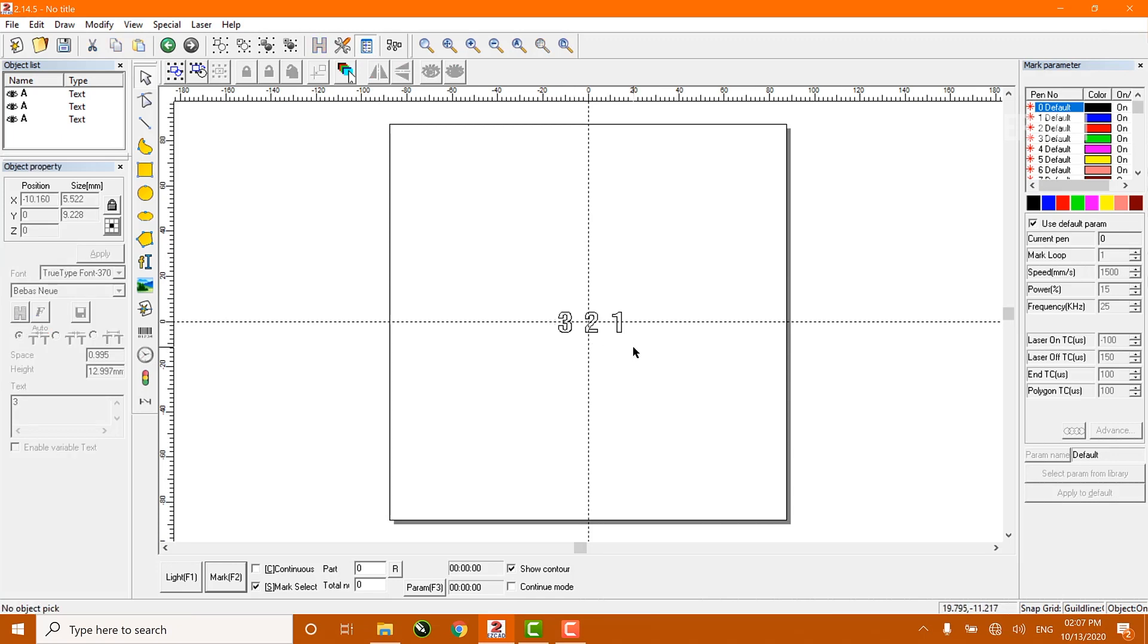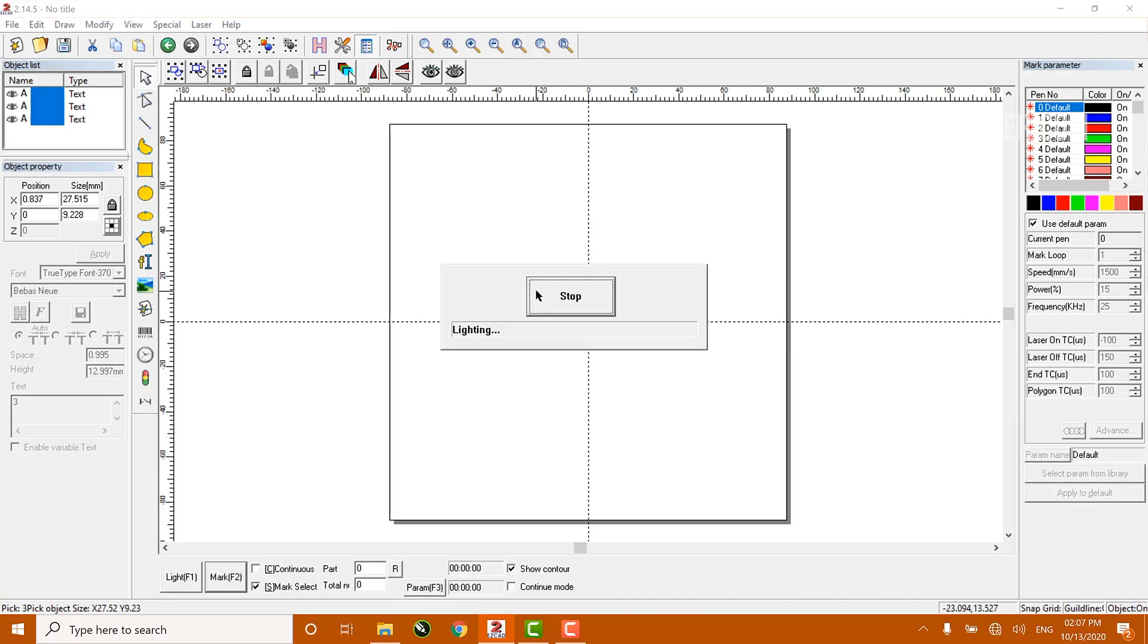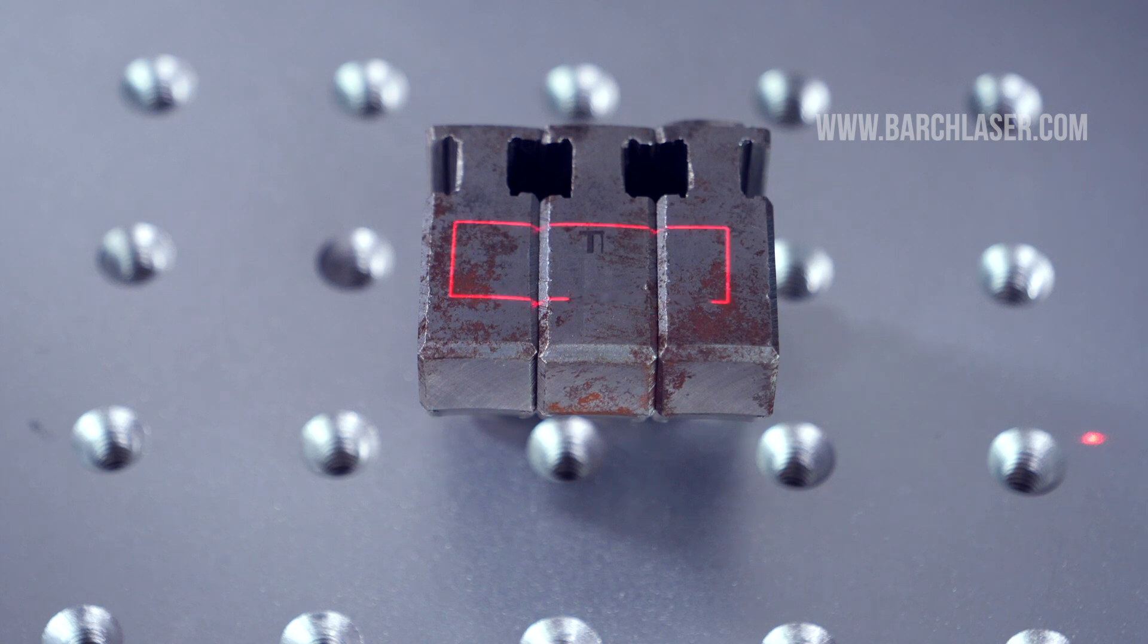Next, I will select three objects at once to see the preview over the material. Remember, if you don't select mark select and show contour, you will only see the overall engraving area, in this case a rectangle. You will not be able to see in detail where each of the numbers will be individually.